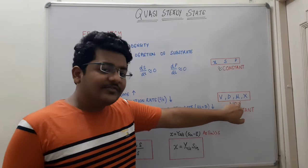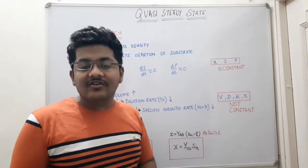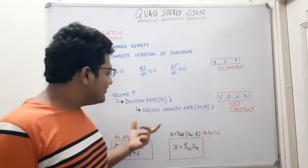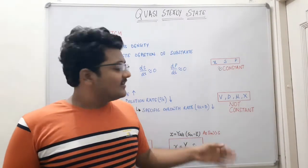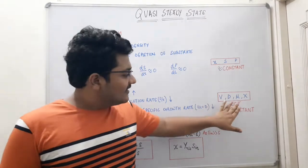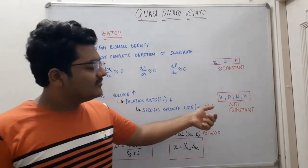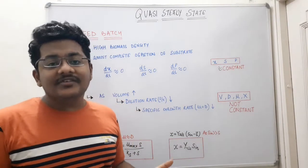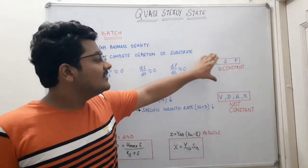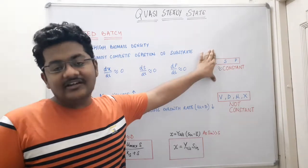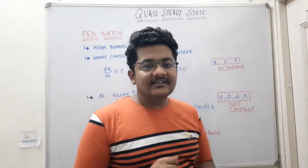So volume, dilution rate, specific growth rate, and the total biomass inside the bioreactor are not constant. If there is some growth rate, total biomass increases; volume is already increasing; dilution rate changes with volume; and mu changes with dilution rate. However, the individual concentrations — biomass concentration, substrate concentration, and product concentration — are approximately constant.